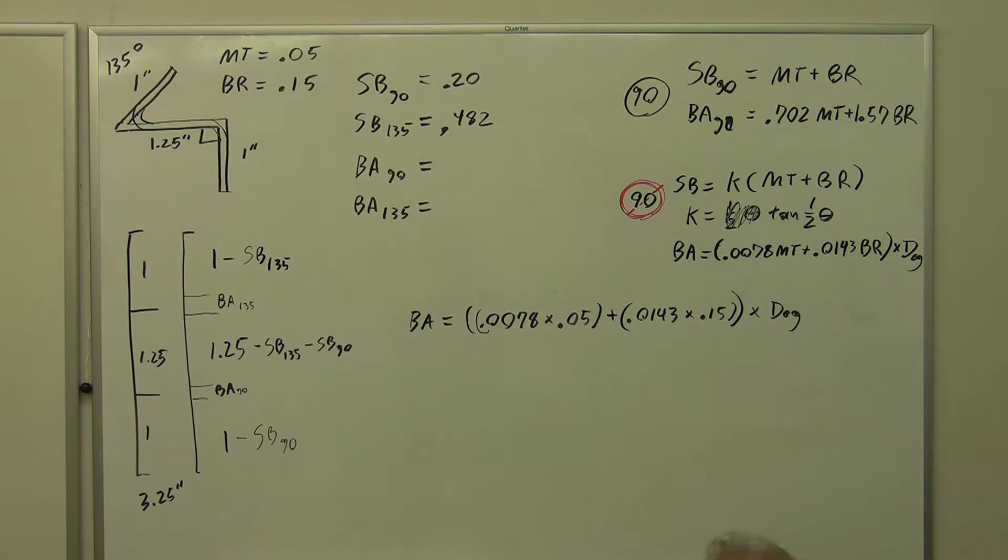0.0078 times 0.05 gives me 0.00039 for my first term. Plus my next term, 0.0143 times 0.15, gives me a total of 0.00215 times the number of degrees, and that was my bend allowance.